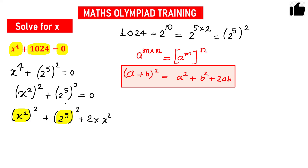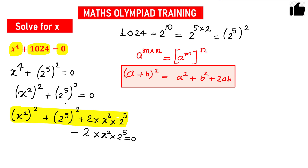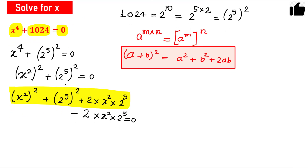So 2ab is 2 times x² times 2⁵. Since we added this term, we also subtract it. So we have (x²)² plus (2⁵)² plus 2·x²·2⁵, minus 2·x²·2⁵ equals 0. This whole grouped expression is nothing but (a + b)², where a is x² and b is 2⁵, which equals 32. So we can write (x² + 32)².